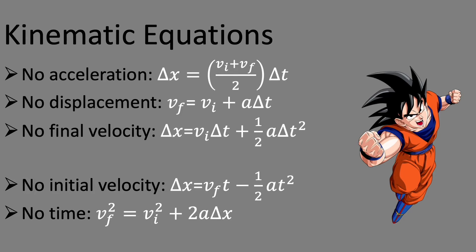Each of these five equations has four of the quantities in it. A kinematics question will ask for an unknown quantity, and the question should give at least three of them. The equations are named by which variable is missing. When you go through a question, find three knowns and one unknown to get four variables. One of the five variables won't appear in the question, and you pick the equation based on what is not given.